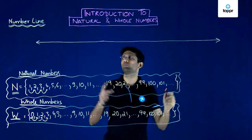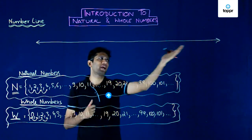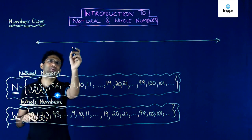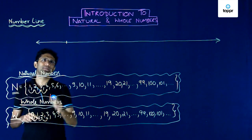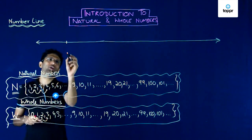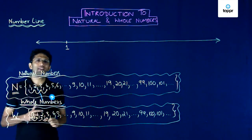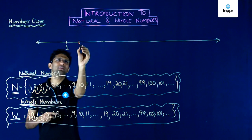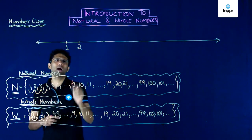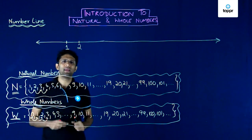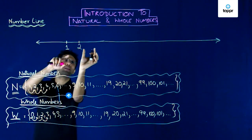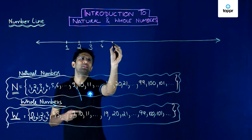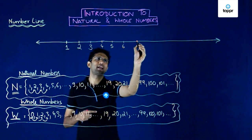A number line is a horizontal line which extends to both directions — to the left and to the right. To represent numbers on this number line, I will take any point on this line and call it my first point, which I will call 1. If I take some equal distance to the right of 1, the next point will be called 2. Taking another equal distance to the right of 2 gives 3. Continuing this process I next get 4, then 5, then 6, 7 and so on.